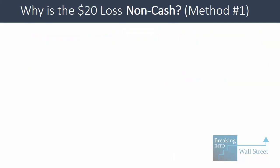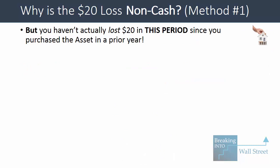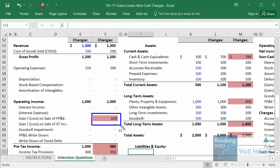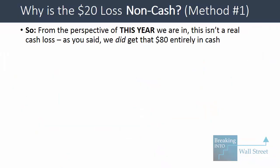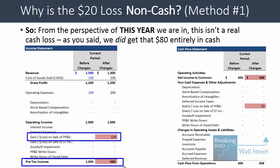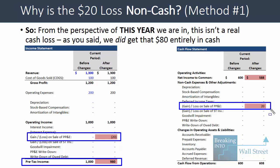That's very important here because what it means is that we haven't actually lost $20 in this period. We purchased the asset in some prior year, and of course this year's income statement only tracks what happens this year. Yes, relative to what we paid before we've lost something, but in this specific period we don't actually have a cash loss. From the perspective of this year, it's not a cash loss — we did get the $80 entirely in cash. So the whole reason we're adding it back is because we had to record a negative on the income statement, and this negative is not a real cash expense in this period. It just reflects that the price fell and we sold it for less than we bought it for.